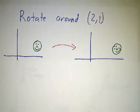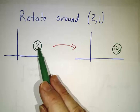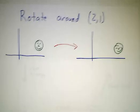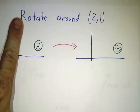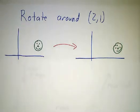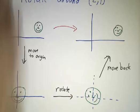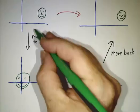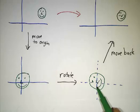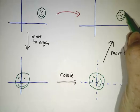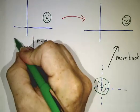So suppose you wanted to rotate around the point (2,1). You've got this face sitting at (2,1). You want to rotate around this point. You don't want to rotate around the origin or else you'll get a face that's sitting over here. You want to rotate around (2,1). And you do it in stages. You're gonna first move it to the origin and then rotate it around the origin and then move it back.